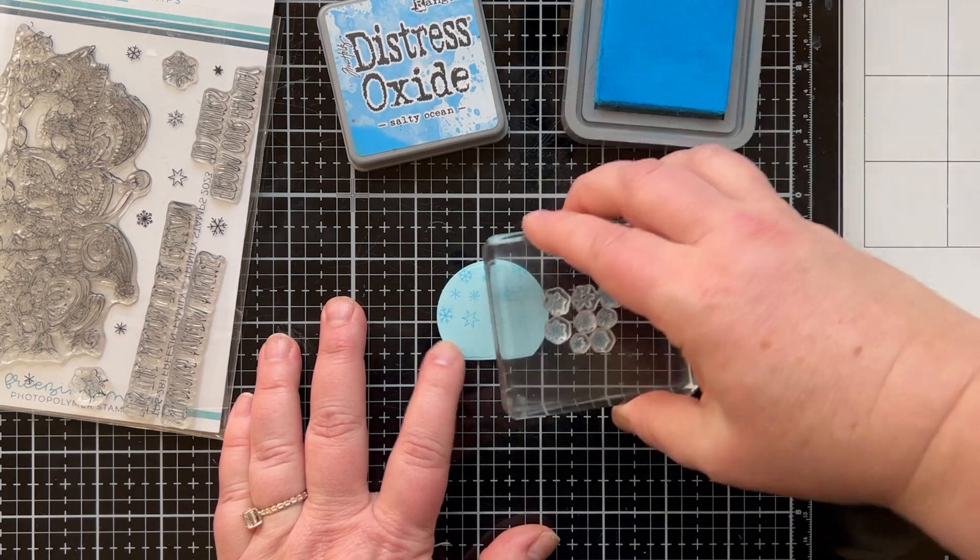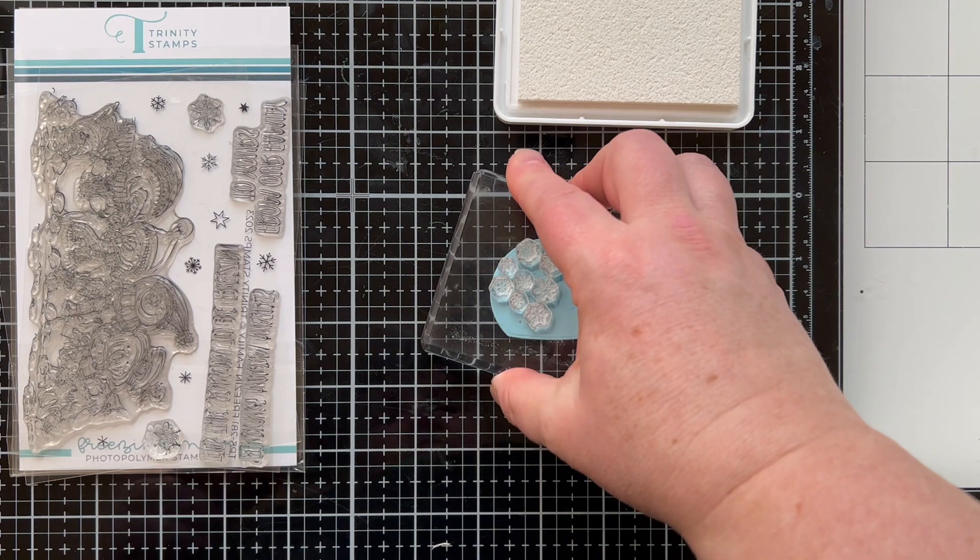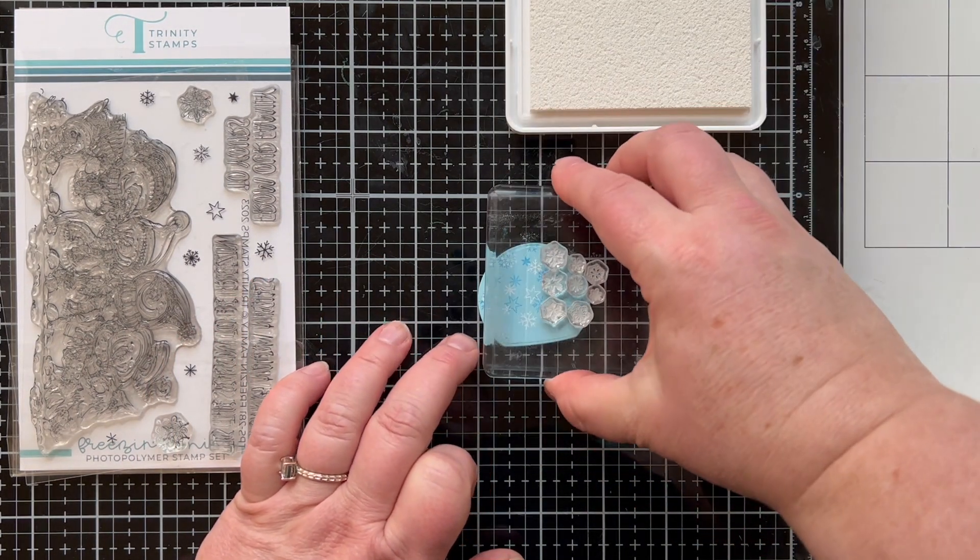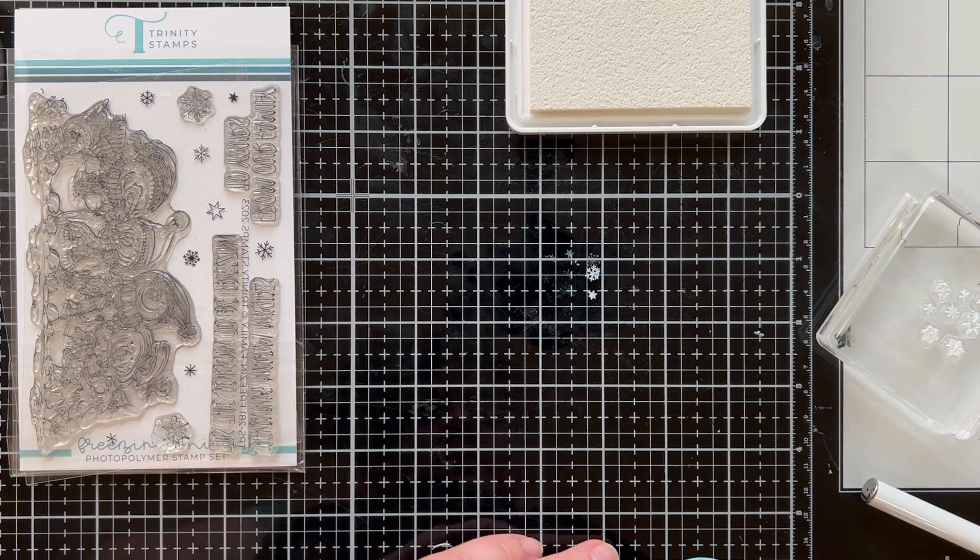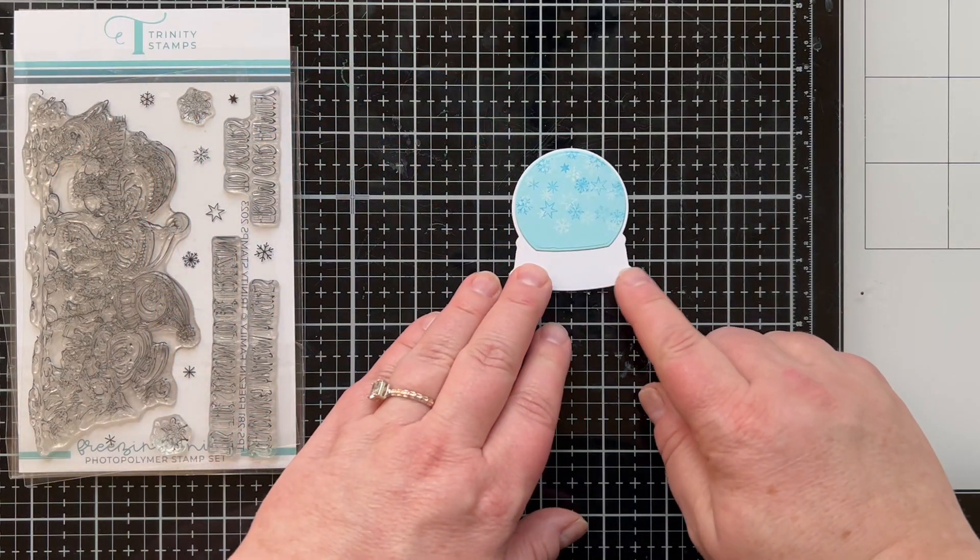I'm stamping that cluster of snowflakes with salty ocean and then with white kind of overlapping it. Just another way to create a background on here is with a tiny little snowflake stamp. I think that's really cute, it gives it a little 3D look.